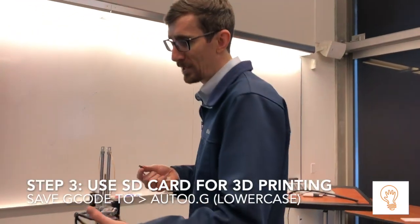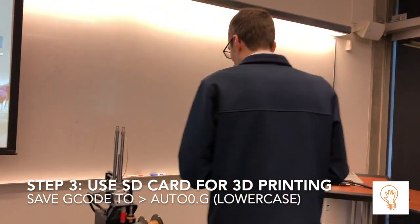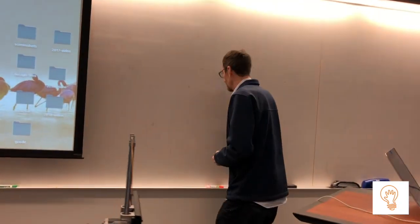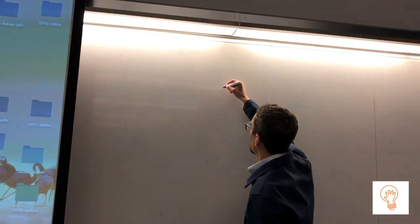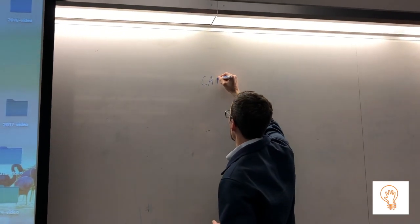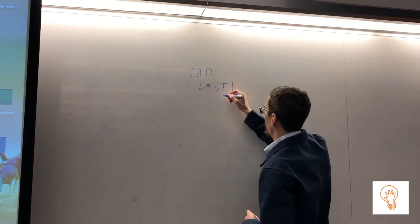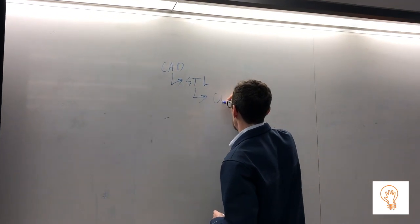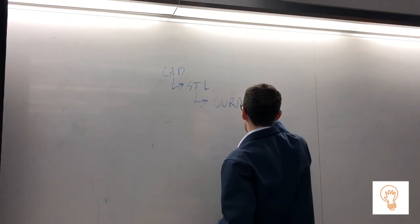You save your G-code to your computer. For the Printrbots, you have to do a special command. You're in your CAD program, you export to STL.